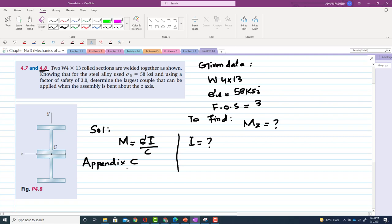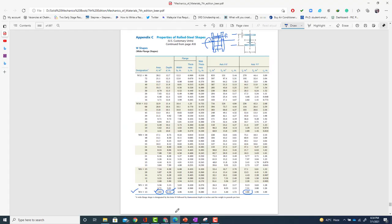In Appendix C, you can see the area, the total depth. Now we will take Ix. In the previous problem we took Iy, but now we will take Ix.